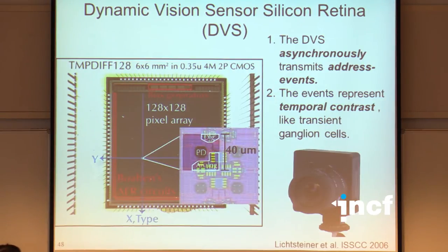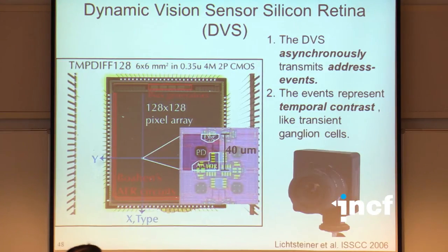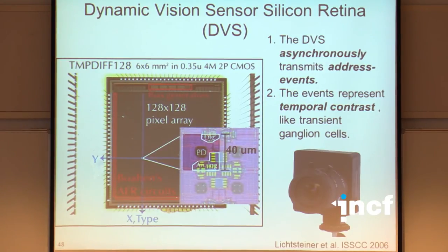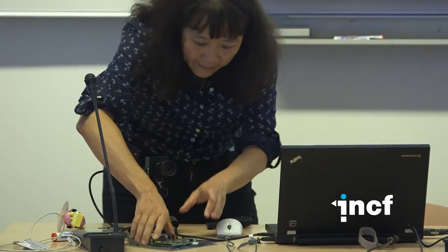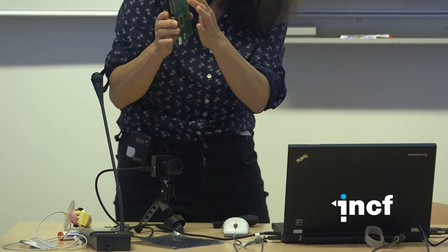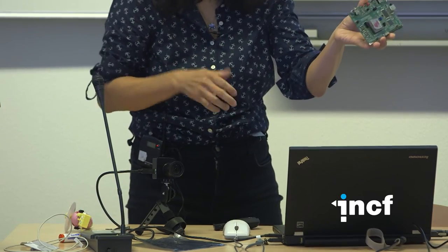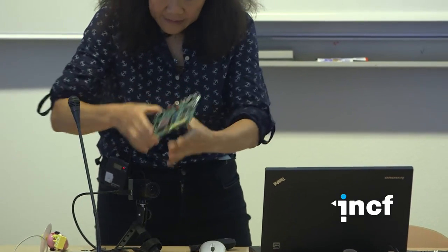Once everything works, the chip comes back in a package and is mounted on a printed circuit board. Here is an example of such a board with a custom chip — in this case the cochlea, which I'll talk about next — and everything is then placed in a nice enclosure.